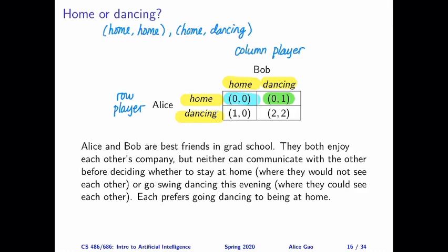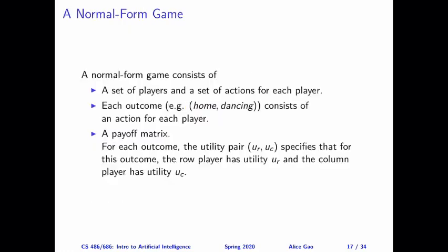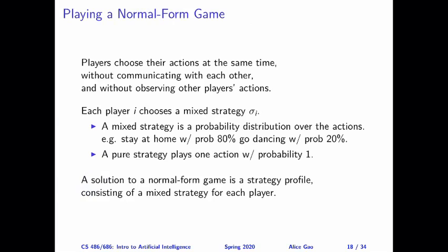Now let's talk about how the two players should play this normal form game. The players cannot communicate with each other; they each choose their actions separately, and then their actions jointly determine the outcome of the game. You can think about the players choosing their actions at the same time — they're not allowed to communicate before or after, and they cannot observe the other player's actions before they choose their own. Another name for these games is a simultaneous move game, because players move simultaneously.